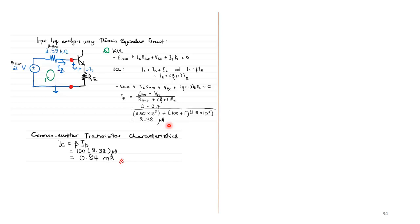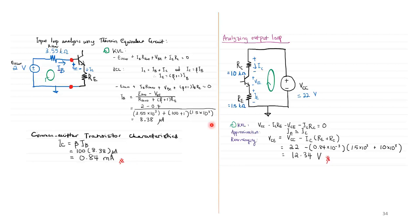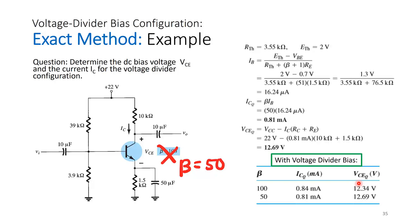Using IC = beta·IB, IC = 100 × 8.38 µA = 0.84 mA. For the output loop, KVL gives: VCC − IE·RE − VCE − IC·RC = 0. Approximating IE ≈ IC and rearranging, we obtain VCEQ = 22 − (0.84 mA)(10 kΩ) − (0.84 mA)(1.5 kΩ) = 12.34 volts.